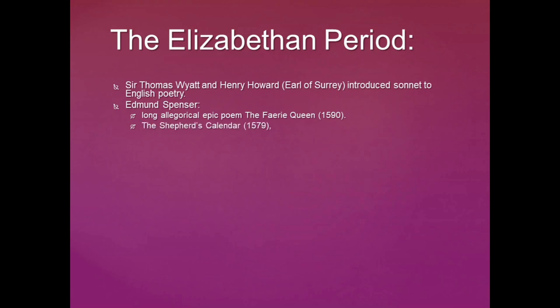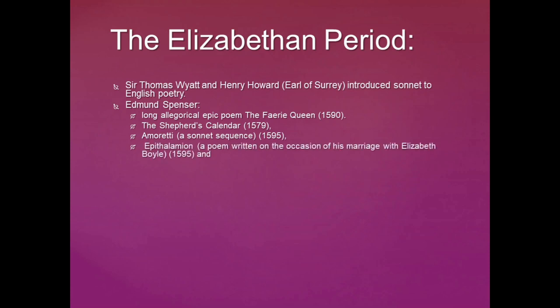The Shepherd's Calendar is a beautiful poem by Edmund Spenser, written in 1579. Amoretti is a sonnet sequence that Spenser wrote in 1595, devoted to Elizabeth Boyle, his lover. Epithalamion, a poem written on the occasion of his marriage with Elizabeth Boyle in 1595, is famous as a marriage song, along with Prothalamion, which is a poem written on the occasion of the wedding of the daughters of a duke.